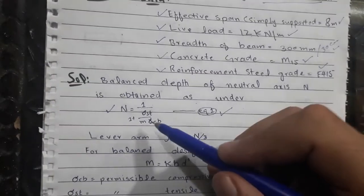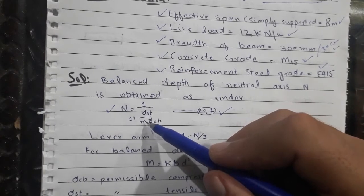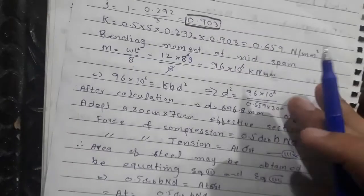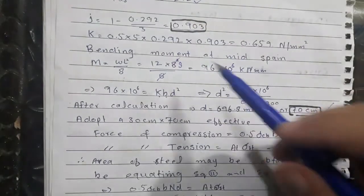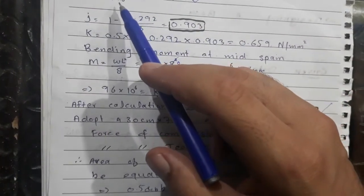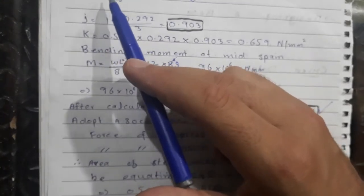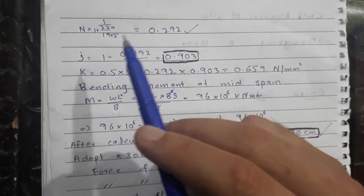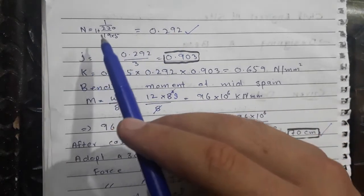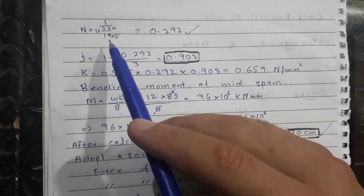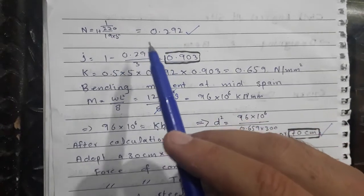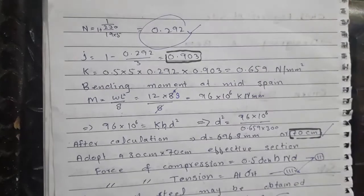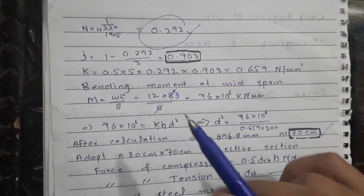Now we put the value of modular ratio m = 19 into the neutral axis formula. So n = 1 divided by (1 plus 230 divided by 19 multiplied by 5). After calculation, the value of the neutral axis depth ratio n = 0.292.